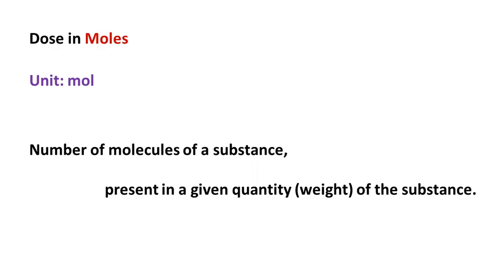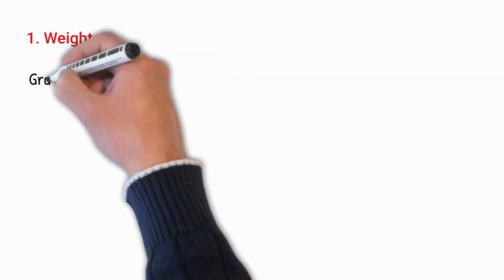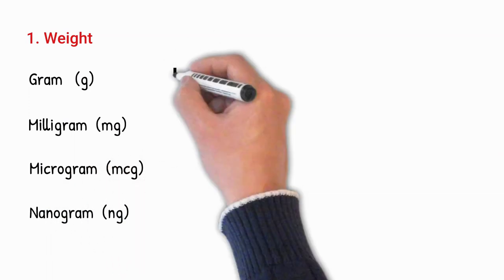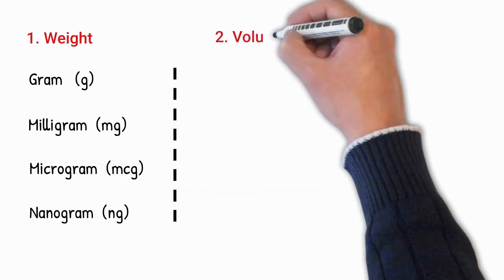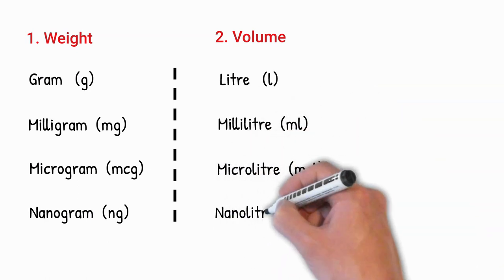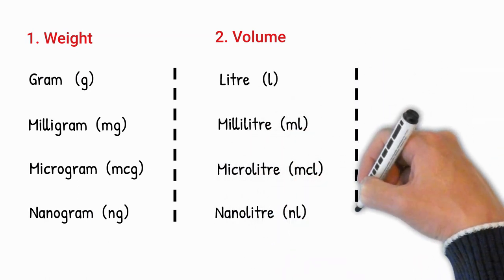The third method of expressing quantity of substances is in moles. It tells you about the number of particles of a substance, like the number of molecules present in a given amount — for example, the number of molecules of paracetamol present in 500 milligrams of paracetamol. We will discuss moles in detail later. So dose can be expressed in weight (grams, milligrams, micrograms, nanograms), in volume (milliliters, microliters, nanoliters), and in moles.